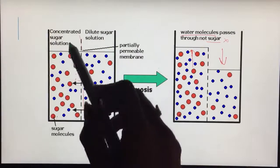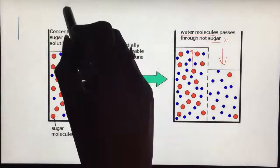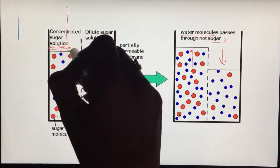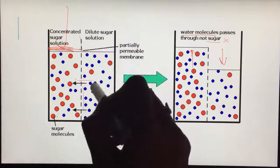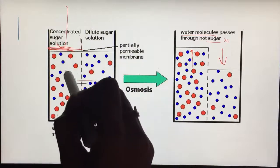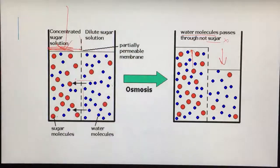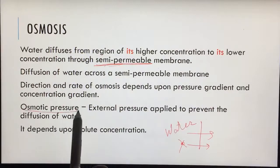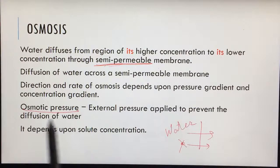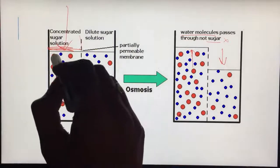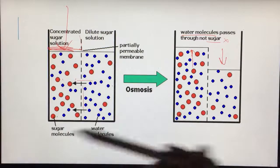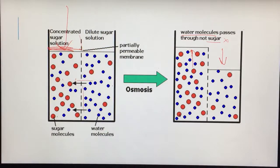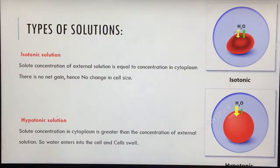To stop this process of osmosis, we have to apply a pressure on this place so that these molecules do not enter this membrane. That pressure is called osmotic pressure - external pressure applied to prevent the diffusion of water. This pressure depends upon the solute concentration. More is the sugar on this side, more will be the pressure we need to apply because the water molecules would be coming with more intensity.